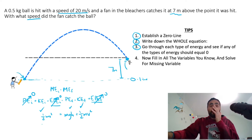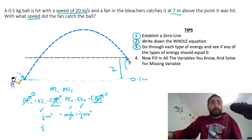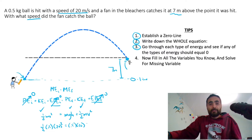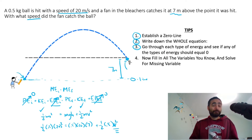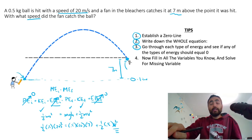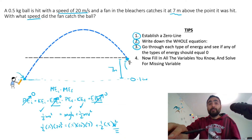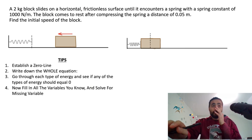We can fill this all in: one half times 0.5 kilograms times 20 meters per second squared equals mass times gravity times height of seven meters, plus one half times 0.5 times velocity final squared. Now we can do all this and find the velocity the fan caught the ball with. This is the easier example — let's keep going; it gets harder and harder.